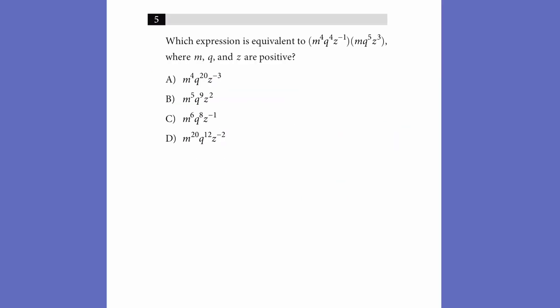For multiplication problems, the rules are a little different — we just add up the exponents of every matching term. For m, we have m to the 4th and m to the 1st, so that's m to the 5th. Same for q: 4 plus 5 is 9. And z to the negative 1 times z to the 3rd is z to the 2nd because 3 minus 1 is 2. So that one's B.